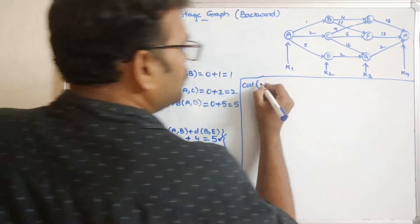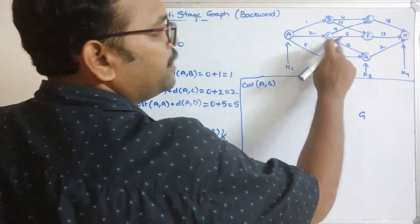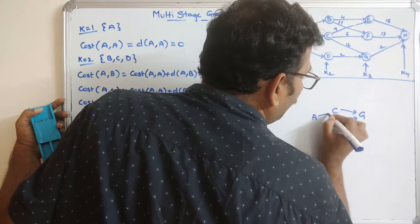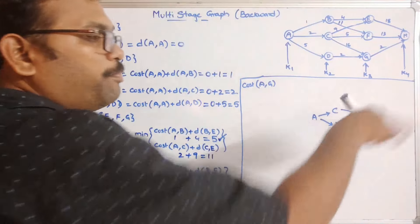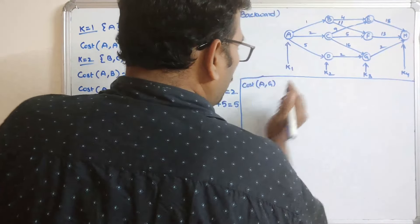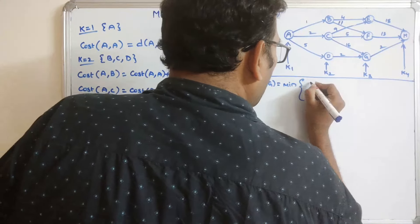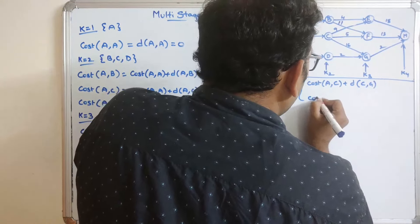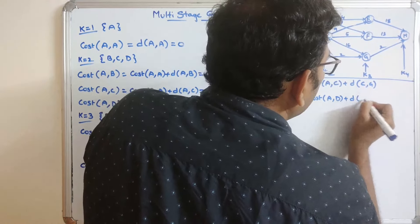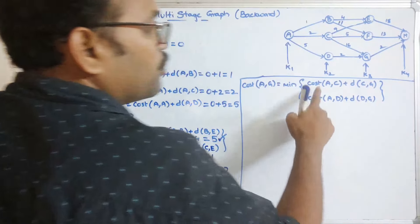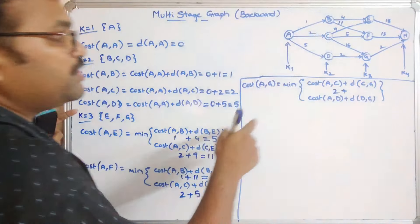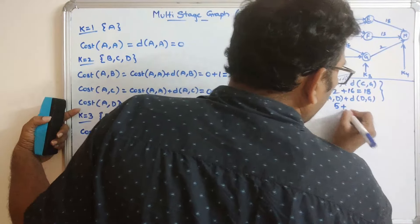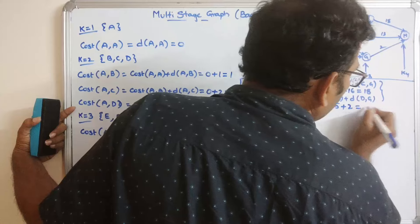Next, cost(A, G): vertex G has two incoming edges, one from C and one from D. The minimum of cost(A, C) + distance(C, G) and cost(A, D) + distance(D, G). Cost(A, C) = 2 plus distance(C, G) = 16, giving 18. Cost(A, D) = 5 plus distance(D, G) = 2, giving 7. We select the minimum, which is 7, so cost(A, G) = 7.